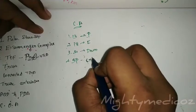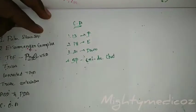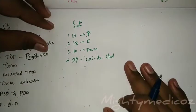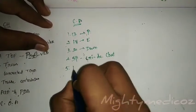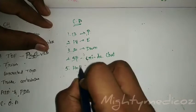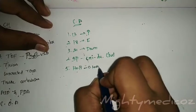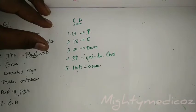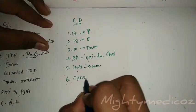Deletion of 5p — which is Cri-du-chat syndrome — is also associated with congenital heart disease. VSD is associated with Holt-Oram syndrome, just as ASD is. Other syndromes such as CHARGE syndrome are also associated with VSD.